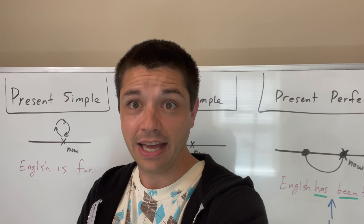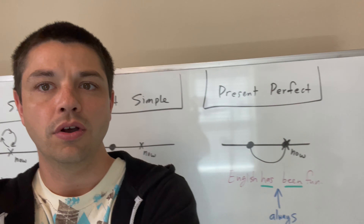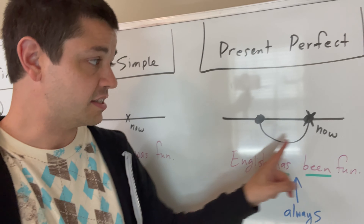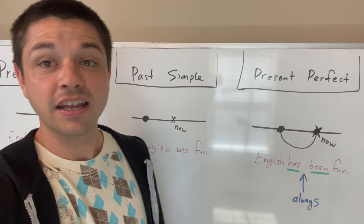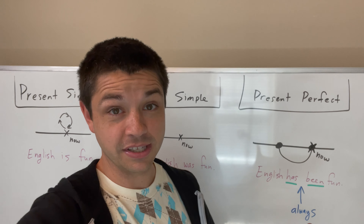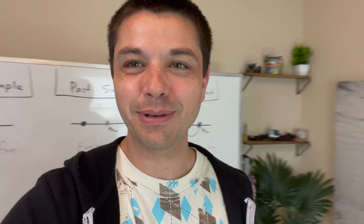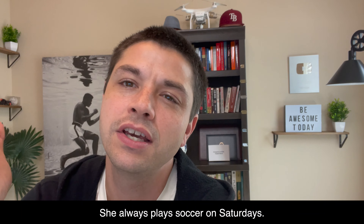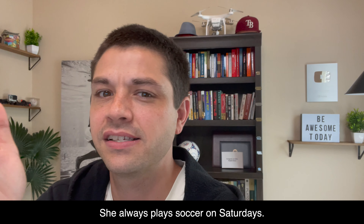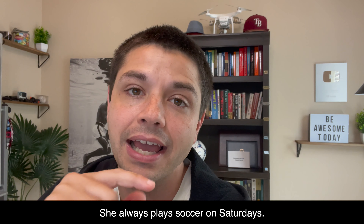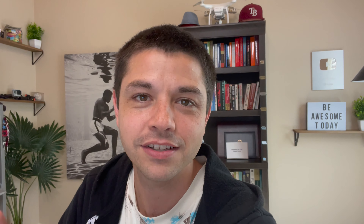Present perfect is different from past simple and from present simple. Present perfect has two points in time: we have something before now, and it's connected to now — and it's really important that they're connected. We could say 'English has been fun' — we started at one point, and after that comes our present moment. So starting from that point until now, 'English has been fun.' This is where we might add in an adverb of frequency like the word 'always.' We could say, 'English has always been fun.' I'm sure you'll agree with me on that one.